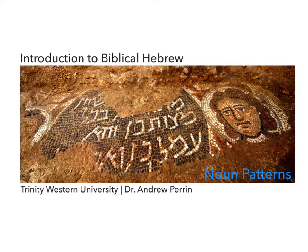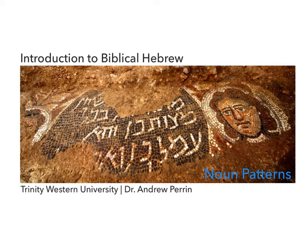That table on page 71 is going to be really important — that masculine and feminine nouns in the singular, plural, and dual. So those patterns of sus, susim, susayim in the masculine, and then the feminine: susa, susot, susatayim. Those are our patterns that we need to know. What we're going to focus on is not anything to do with the endings, but what can happen earlier in the word in terms of vowels that might change when we add one of those endings from our inflected noun paradigm.